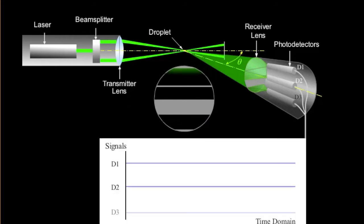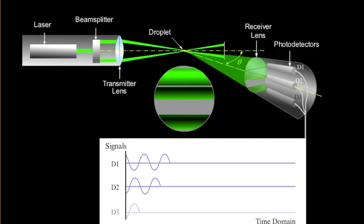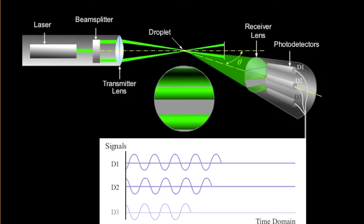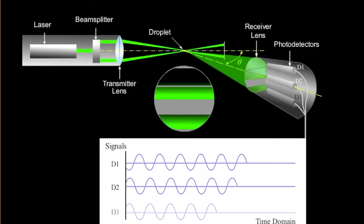D1, D2, and D3. These are the signals that we use to measure the droplet size. You can see the phase shift between them. And that relates to the space in between the detectors.